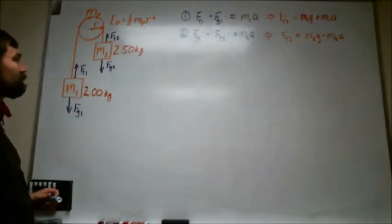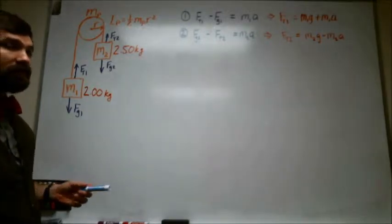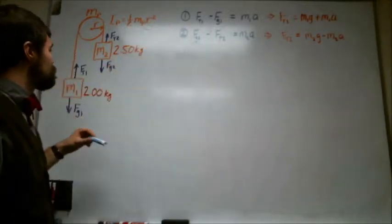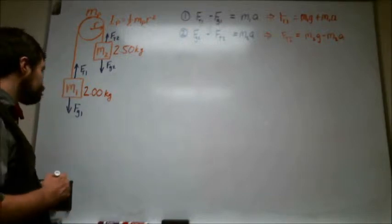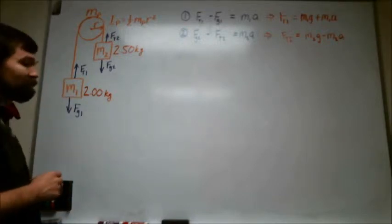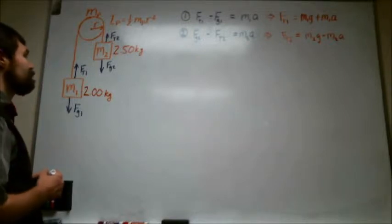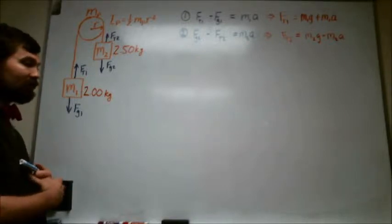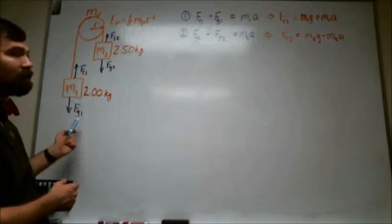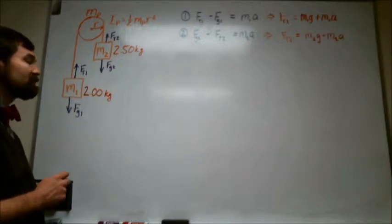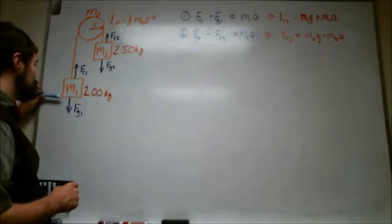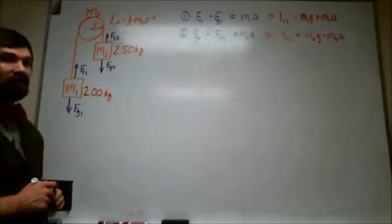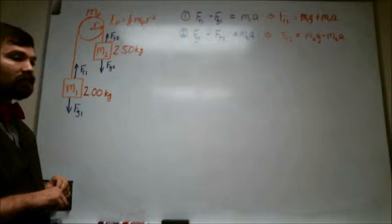Basically what it says is that the first equation, the top equation, is looking at the mass on the left side of the pulley, the lighter mass in other words, and it basically says that there's two forces acting upon this mass. One is from the tension of the string straight up, one is from the weight of this thing straight down.